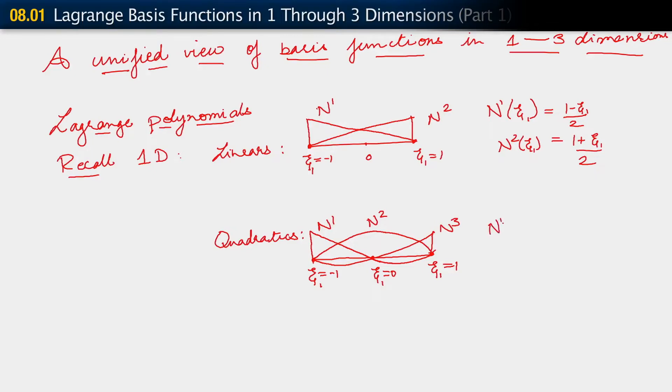The expressions for them were: N1 function of C1 is 1 minus C1 times C1 over 2. N2 equals 1 minus C1 squared, and then N3 is 1 plus C1 times C1 divided by 2.